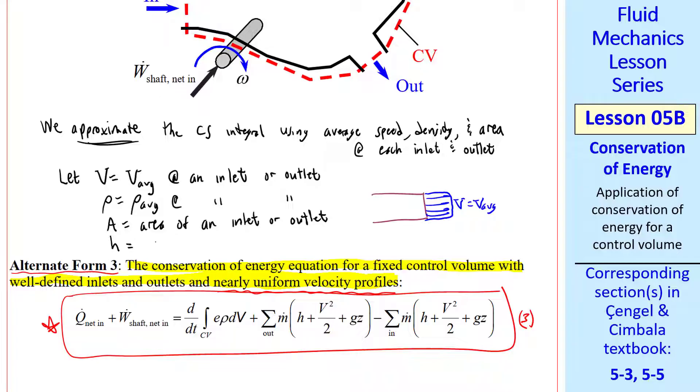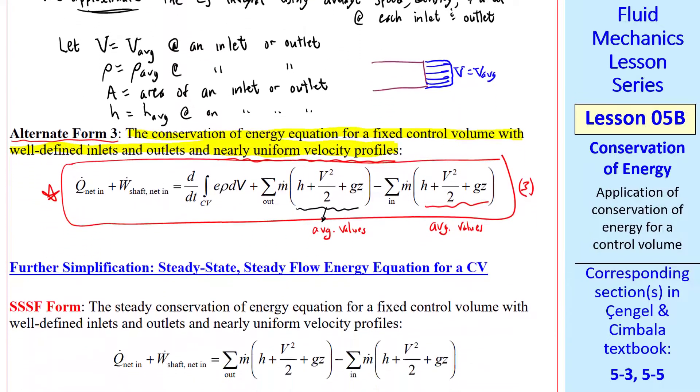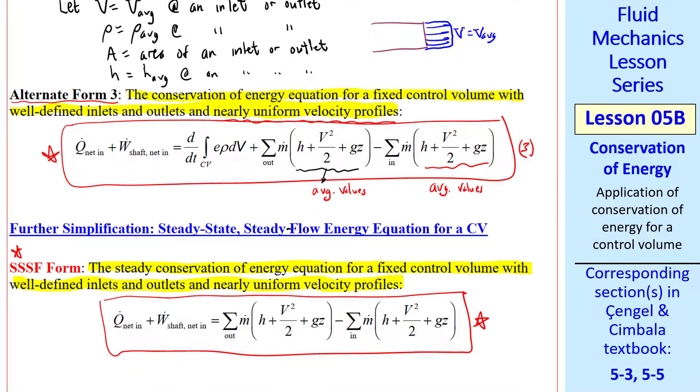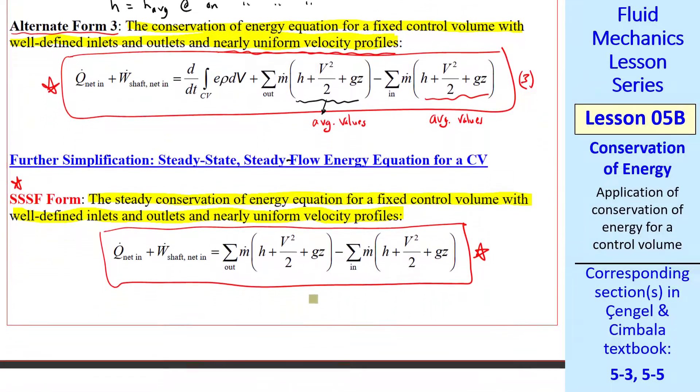Let me add H to my list, where H is the average specific enthalpy at an inlet or outlet. If your surface is not horizontal, Z itself would have to be the average. So all three of these are average values for both inlets and outlets. We can simplify even further if the flow is steady. You may have seen this terminology in your thermo class, steady state, steady flow. This is the final form. It's the steady conservation of energy equation for a fixed control volume with well-defined inlets and outlets and nearly uniform velocity profiles.